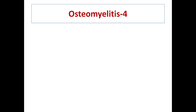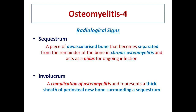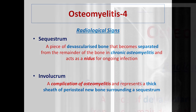Sequestrum and involucrum are two radiological signs that may be noticed in osteomyelitis. In chronic osteomyelitis, a piece of bone that is devascularized and separated from the remaining bone, acting as a nidus for ongoing infection, is called a sequestrum. In the case of involucrum, around the sequestrum there will be formation of a thick sheath of periosteal new bone.